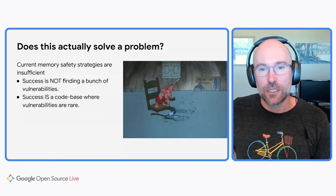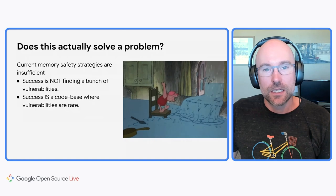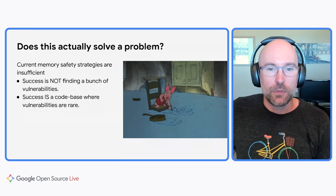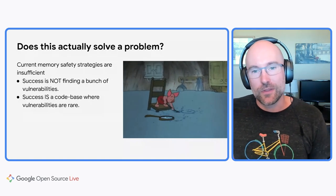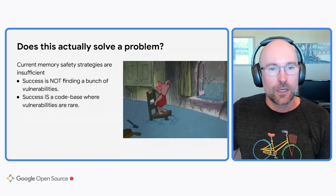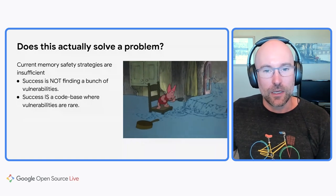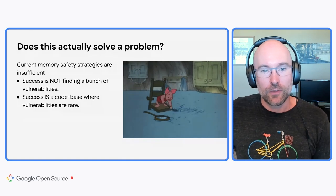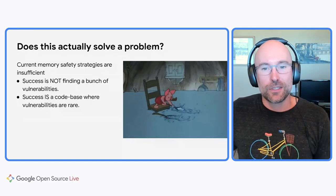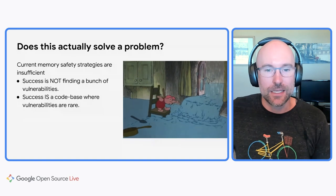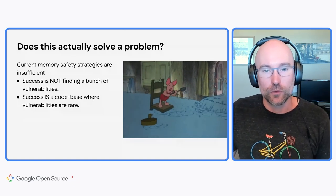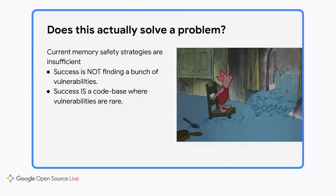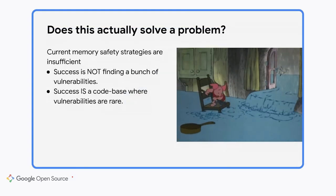Part of the problem, I think, is that we've been chasing the wrong metrics for success. There's been a lot of focus on the number of vulnerabilities found or prevented, but really that needs to be considered within the context of the entire problem. We can't just focus on removing bugs. We need to step back and ask: are our efforts actually resulting in vulnerabilities becoming rare? Of course, we have a good way to prevent memory safety vulnerabilities — memory safe languages.